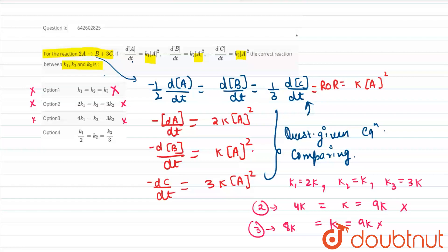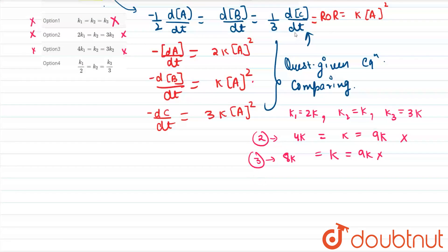Now coming to the fourth option it is saying k1 by 2. So friends coming to the fourth option. In fourth option it is saying k1/2, so it will be k. It is equals to k2. It is equals to k and k3/3. It is equals to k which is the correct option. So our correct option is option number 4.